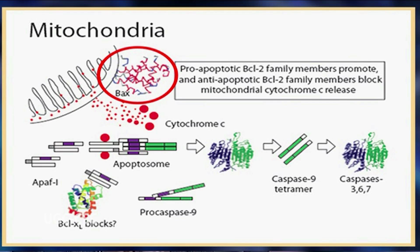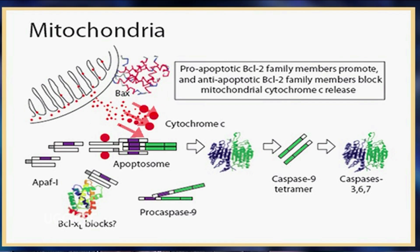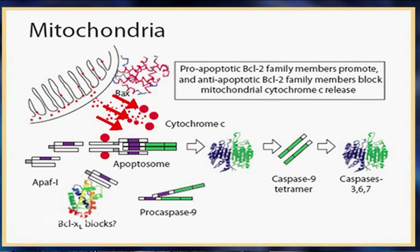BAX proteins undergo a change in conformation that causes them to insert into the outer mitochondrial membrane and assemble into a multi-subunit protein-lined channel. Once formed, this channel dramatically increases the permeability of the outer mitochondrial membrane and promotes the release of certain mitochondrial proteins, most notably cytochrome C, which resides in the inter-membrane space. Mitochondrial membrane permeabilization may be accelerated by a rise in cytosolic calcium levels following release from the endoplasmic reticulum.